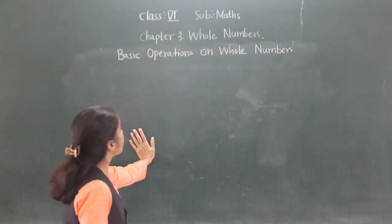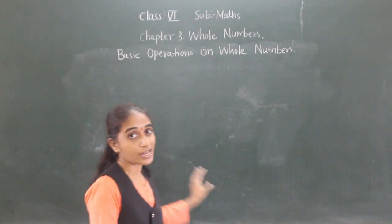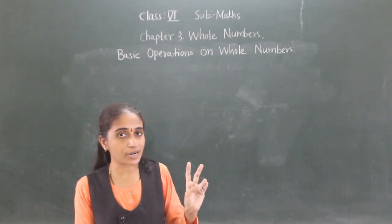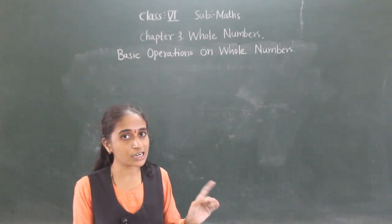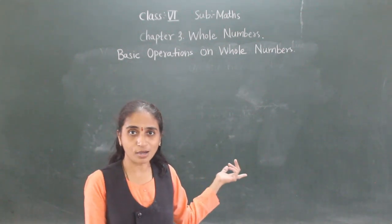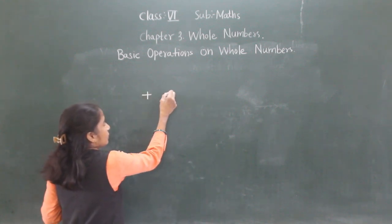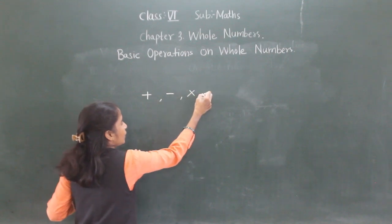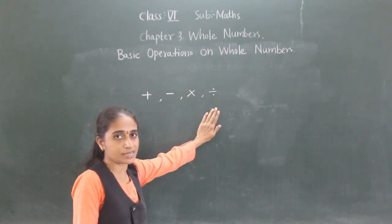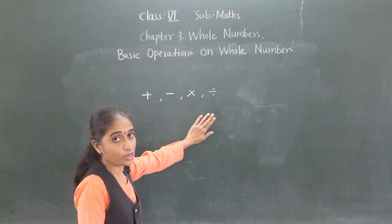Let's move towards basic operations on whole numbers. There are 4 basic operations in mathematics: addition, subtraction, multiplication, and division. These can also be applied to whole numbers.